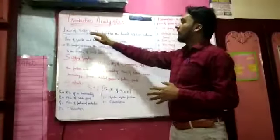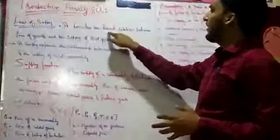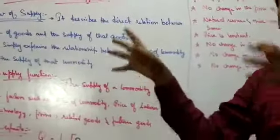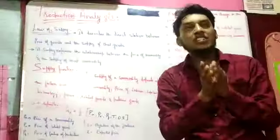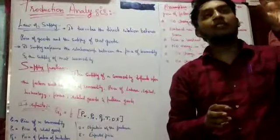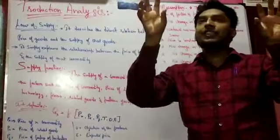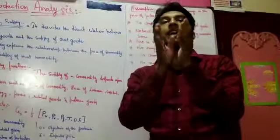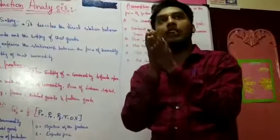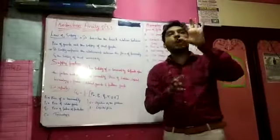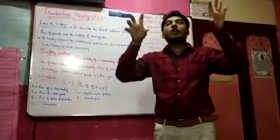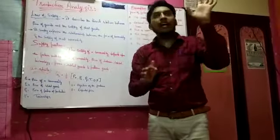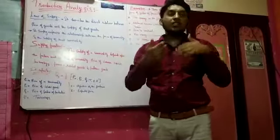Let's see the meaning of Law of Supply. It describes the direct relation between the price of goods and the supply of that goods. So, it is nothing but a relationship between the price of the goods and the supply of the goods. If the price of the commodity is high, the supply will be high.